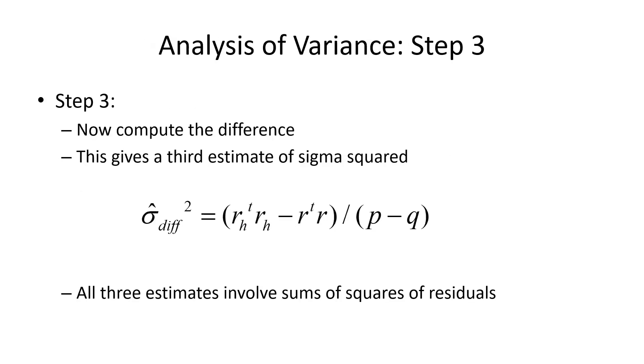Now we do something unexpected. We take the difference of the sums of squares. So we take the hypothesized sums of squares residuals minus the sums of squares residuals corresponding to the full model. This quantity is always positive because the hypothesis model is smaller, meaning leaving more room for error. So the sums of squares residuals here are larger than those corresponding to the full model.